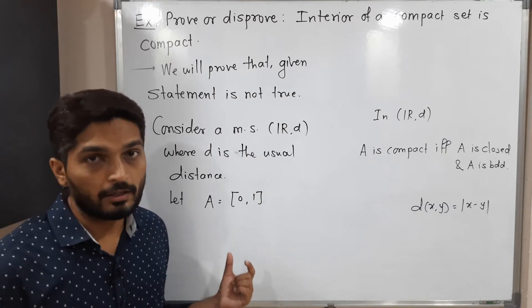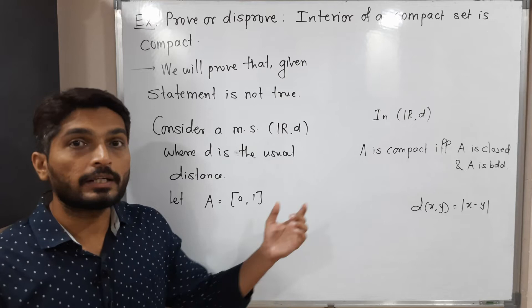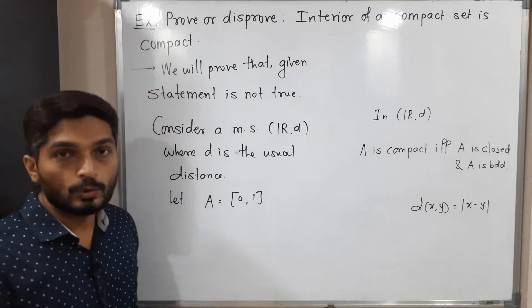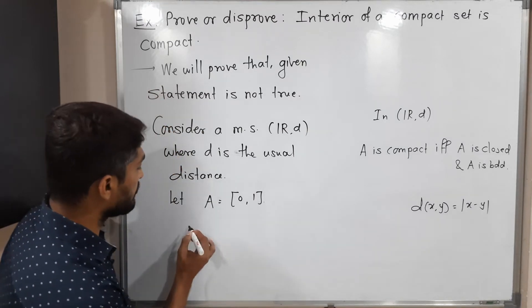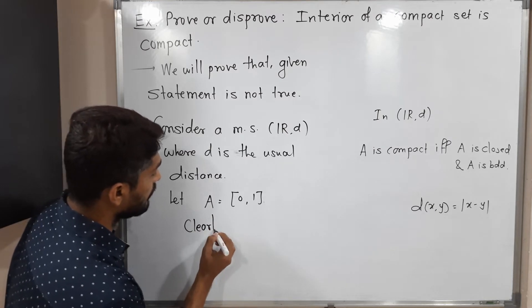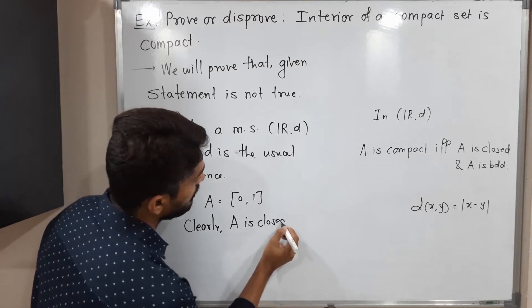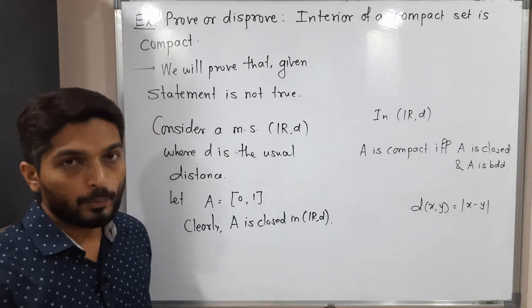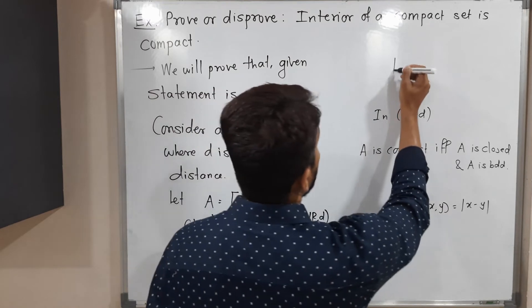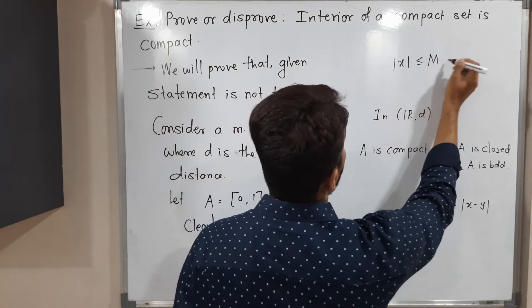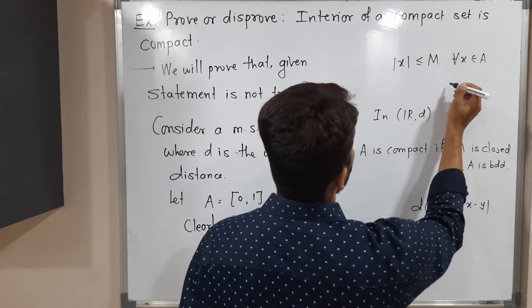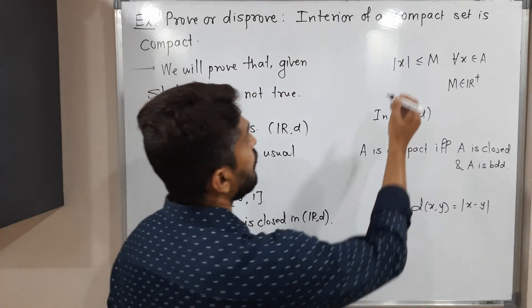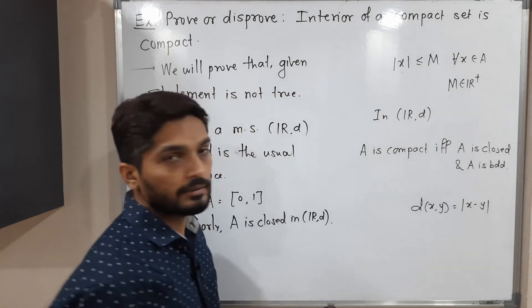Let us check whether A = [0, 1] is closed and bounded. Since it is a closed interval, clearly A is a closed set in R with the usual distance. For boundedness, the definition requires |x| ≤ M for all x in A, for some positive real number M.